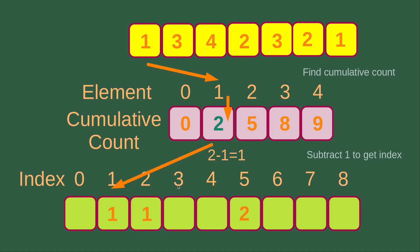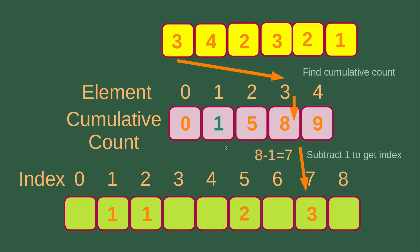The cumulative count for element number 1 becomes 2. Then we put the third element of the unsorted list, which is 1. For 1, I check the cumulative count, which is 2, and subtract 1 to get 1. So this value of 1 is put into index 1 of the final answer, and the cumulative count for element number 1 becomes 1. Then I put the fourth number, which is 3. Element number 3 has a cumulative count of 8, and I subtract 1 from 8 to get 7. So index number 7 should be the position of element number 3.